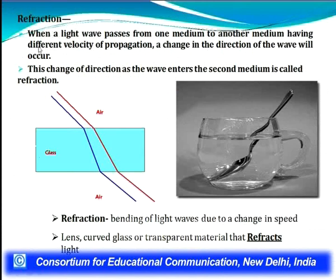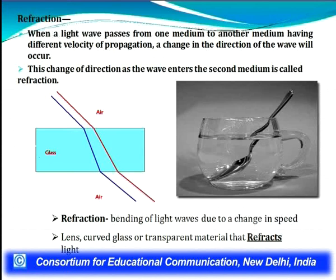Refraction means when a light wave passes from one medium to another medium having a different velocity of propagation, a change in direction of the wave takes place. For example, light coming from air passes through glass and the direction changes. When it emerges from glass back into air, the angle changes again. This change of direction as a wave enters the second medium is called refraction.